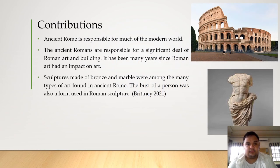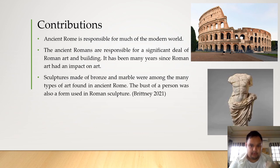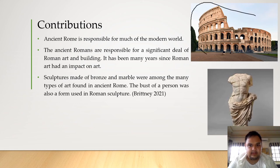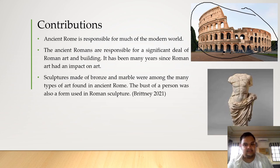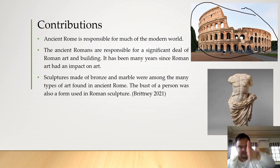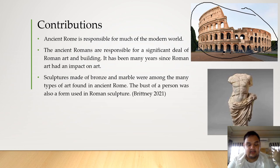Ancient Rome is known to be responsible for much of the modern world and is a source of inspiration. The ancient Romans are known for their arches, as shown in the Coliseum. The difference between the architectural styles of the Romans and the Greeks is that Greeks would create with columns, while Romans are known for their arches. They use similar materials but different styles, and their architectural styles can be seen all over Eastern Europe.